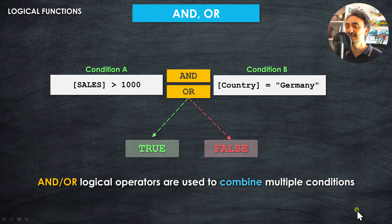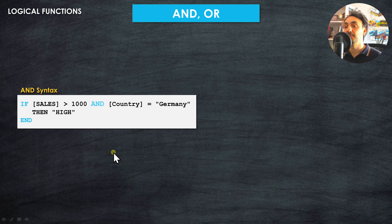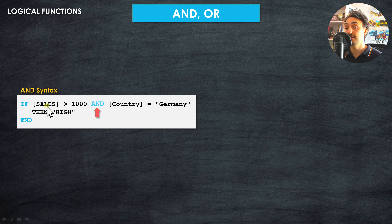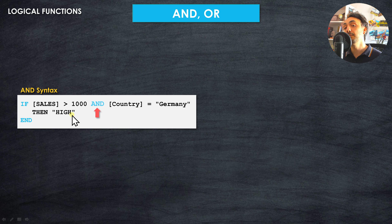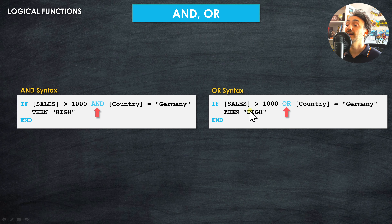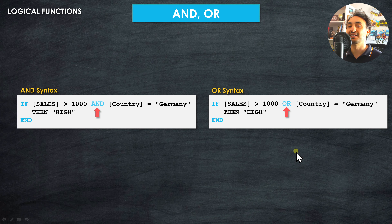Let's see how the syntax looks in IF statements. For the AND operator, we have the IF statement with two conditions and the AND operator between them. For example: if the sales is higher than 1000 AND the country equals Germany, then we get the value 'high', otherwise null. The same structure applies for OR: if sales is higher than 1000 OR country equals Germany, then we get 'high'. Let's check an example to understand the differences between AND and OR.